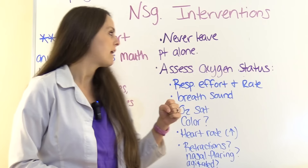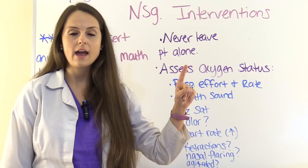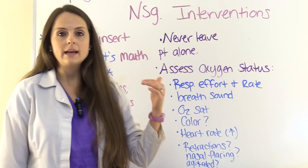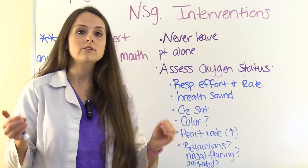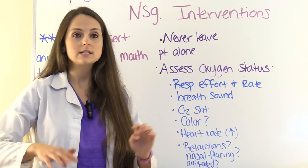Assess oxygen status, maintain the airway, and monitor respiratory effort and rate. With the pediatric population, the normal respiratory rate varies, but if anything is greater than 60 that is abnormal for all of them. A respiratory rate of 60 or above is not good.